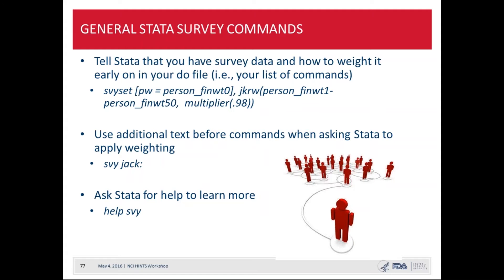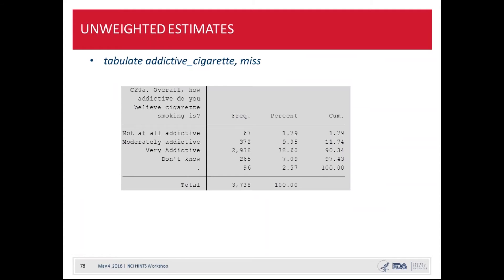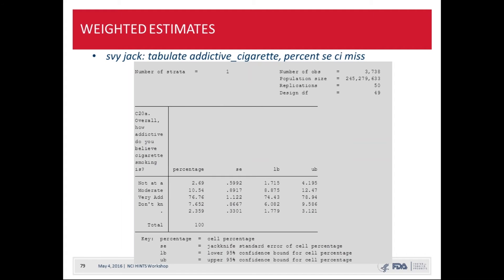This shows the difference between unweighted and weighted estimates in Stata. The sample size was 3,738, and for the question about belief in the addictiveness of cigarette smoking, a majority — almost 79% — said cigarette smoking was very addictive. In the weighted output, using the SVY jack command with standard errors and confidence intervals, the jackknife replicate weighting scales up to represent over 200 million respondents.